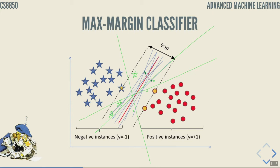Before, when training a perceptron on two linearly separable classes, the perceptron would converge to any separating solution — this line, that line, any of the solutions that separate the classes exactly. But the Bayes optimal boundary tries to maximize the distance between classes, so that unobserved points still have room to be correctly classified. For linearly separable data, we want to place our hyperplane closer to the middle of the separating gap rather than close to either class.